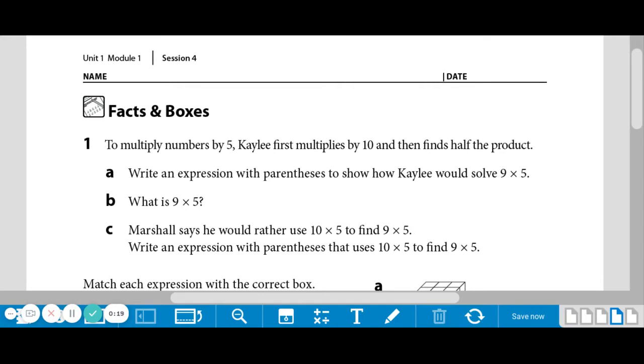Number one, to multiply numbers by 5, Kaylee first multiplies by 10 and then finds half the product. So when she's doing this, it's saying that she multiplies by 10 and then finds half of that product, and half we know means divide by two.